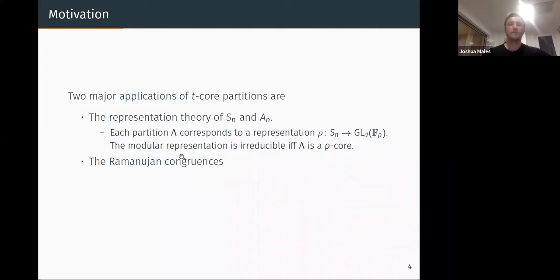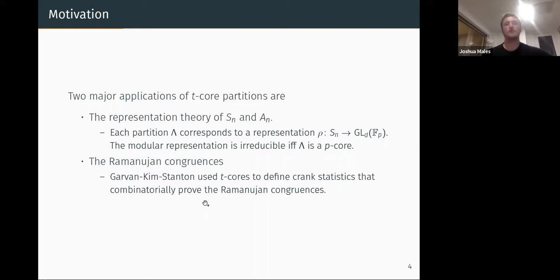The second application is the Ramanujan congruences. I guess everyone here knows these. These are the congruences on partitions. These have been proved many years ago using modular arguments. But the first time they were able to combinatorially prove this was Garvan, Kim, and Stanton who use t-cores, these weird partitions, to define certain crank statistics and then give a proof combinatorially.